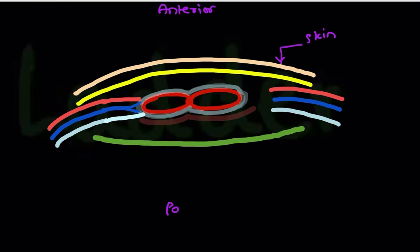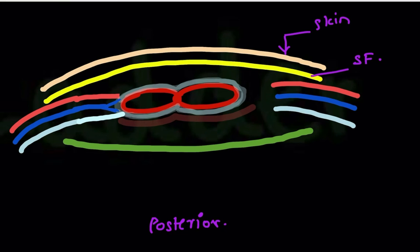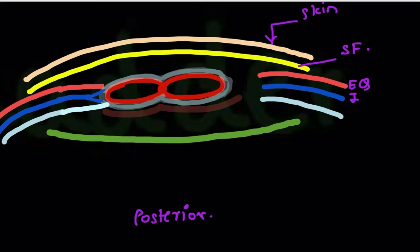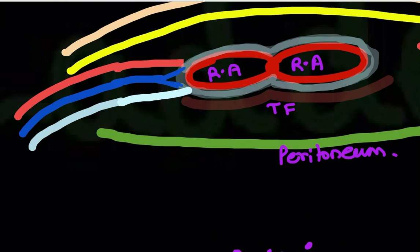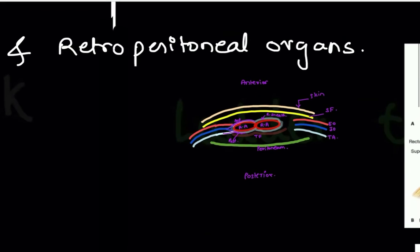In the simplified diagram: the outermost is skin, this is the anterior region and this is posterior — viewed from the top. Then the superficial fascia divided into two. Laterally you have external oblique, internal oblique, and transverse abdominis. In between is the rectus abdominis muscle. On the posterior side is transversalis fascia shown in gray, and the green is the peritoneum.